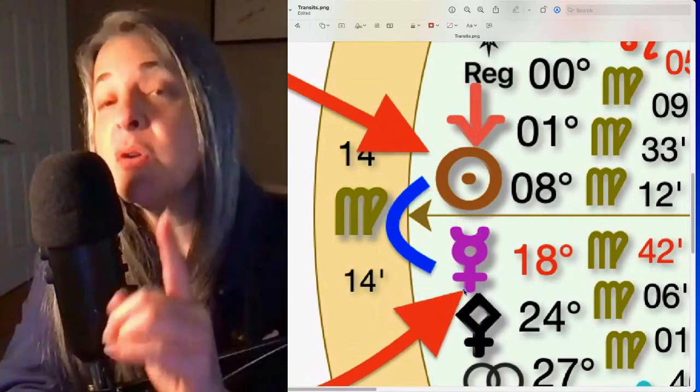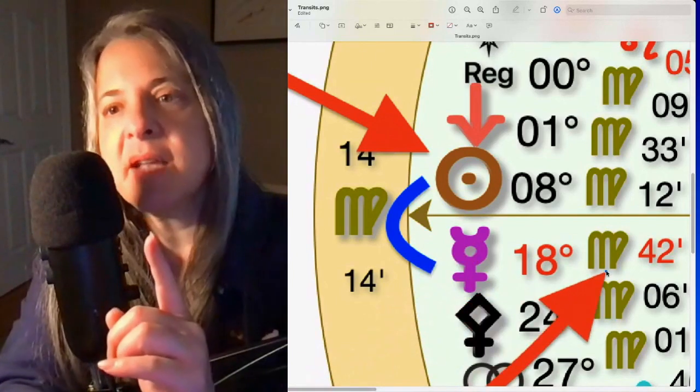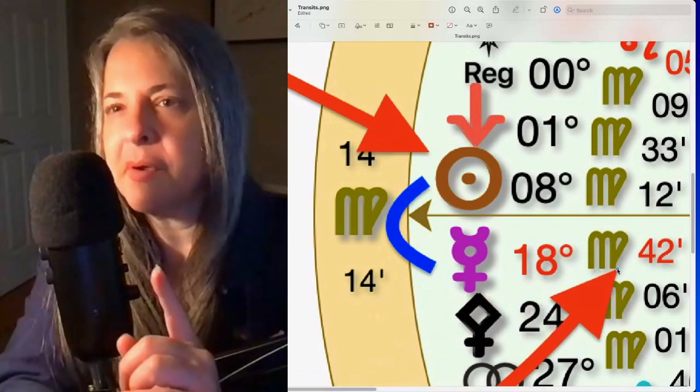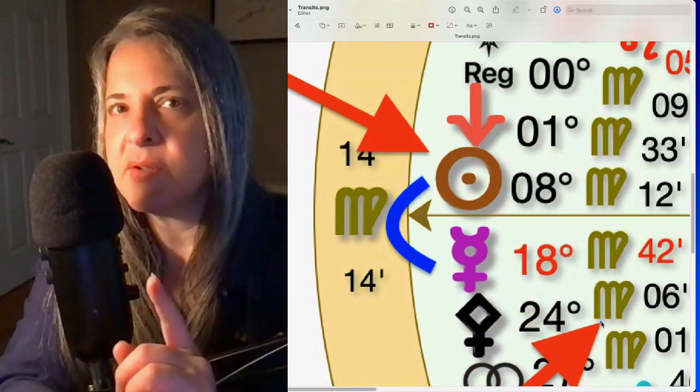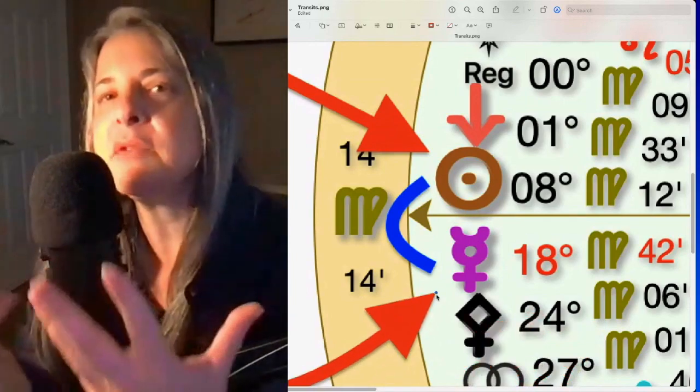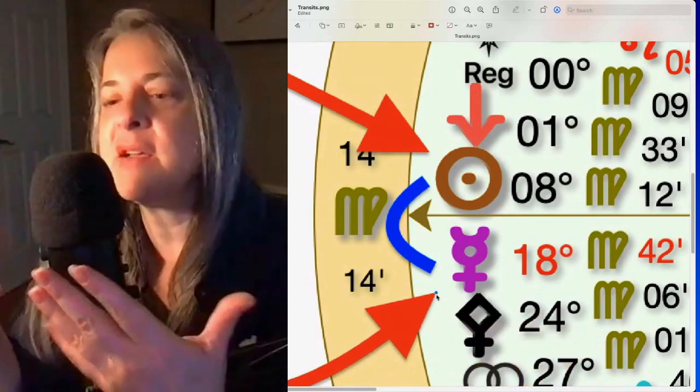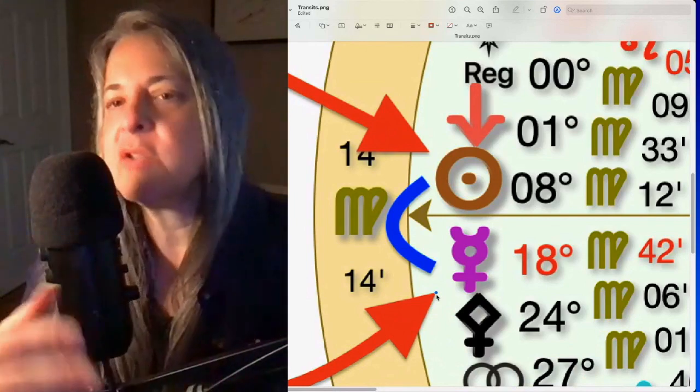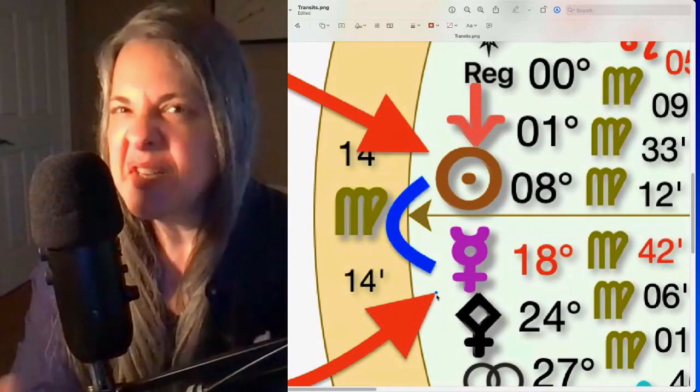My thinking isn't going to be as sharp because Mercury likes details and it's in the sign of Virgo. There's a lot of Virgo energy because Virgo is the details, it is the connecting of the dots and being that troubleshooter of the zodiac.